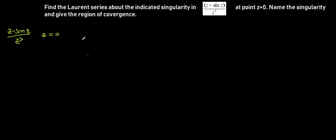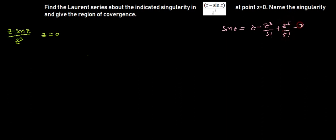First of all I would like us to look at the Maclaurin series expansion for sine z. The Maclaurin series expansion for sine z is equal to z minus z³ over 3 factorial plus z⁵ over 5 factorial minus z⁷ over 7 factorial and it goes to infinity. This is the Maclaurin series expansion for sine z — you should have this knowledge already.